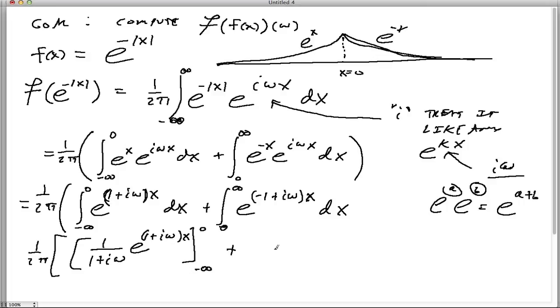And the same thing here. We're now going to go 1 over negative 1 plus i omega. And do the same thing here. Negative 1 plus i omega x. And evaluate it at the limits of integration.